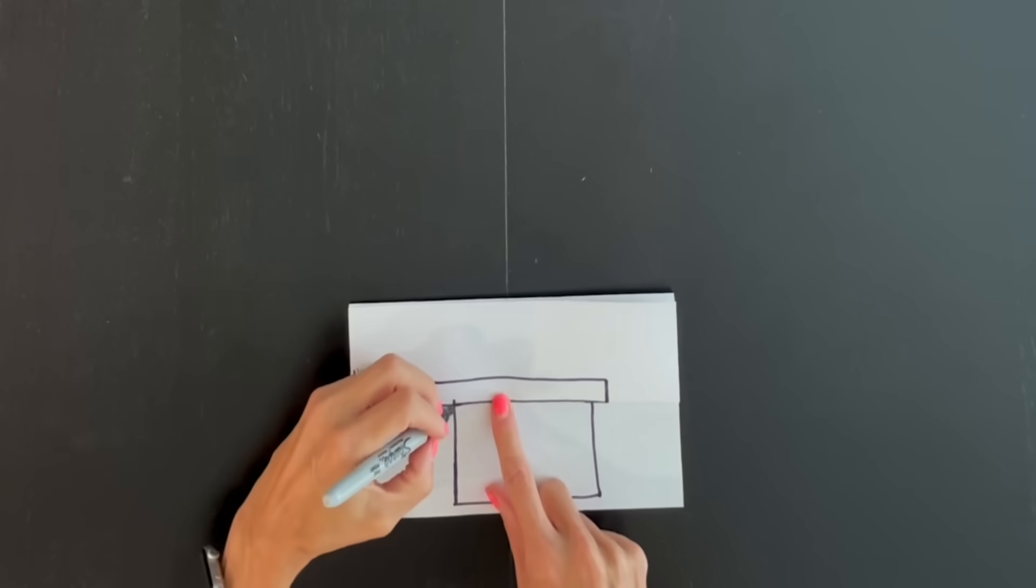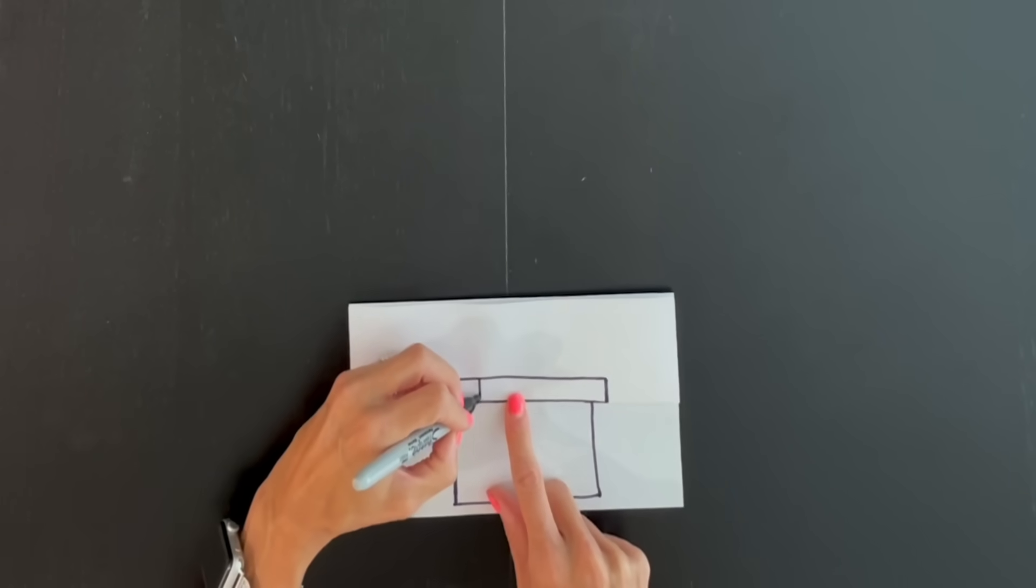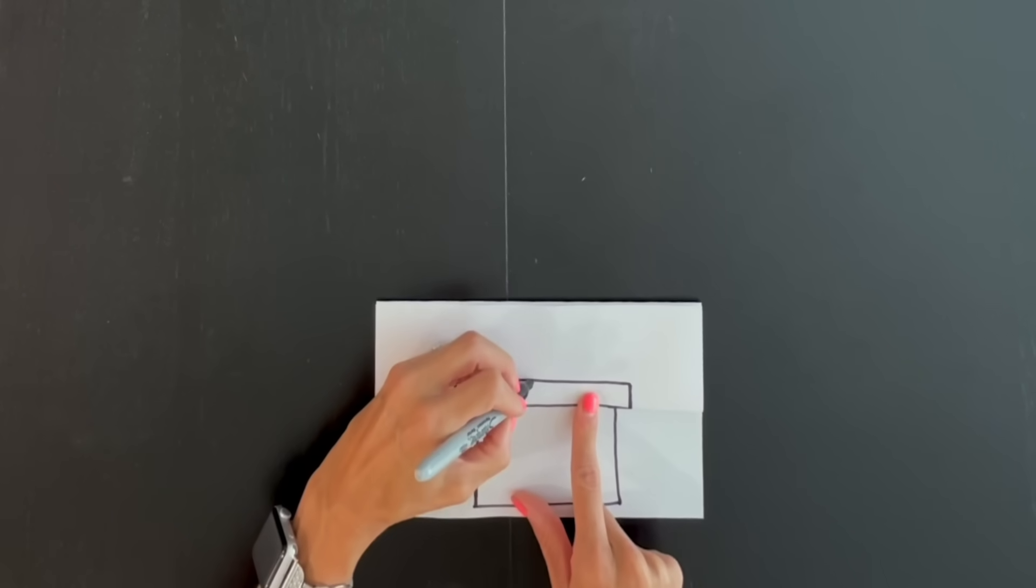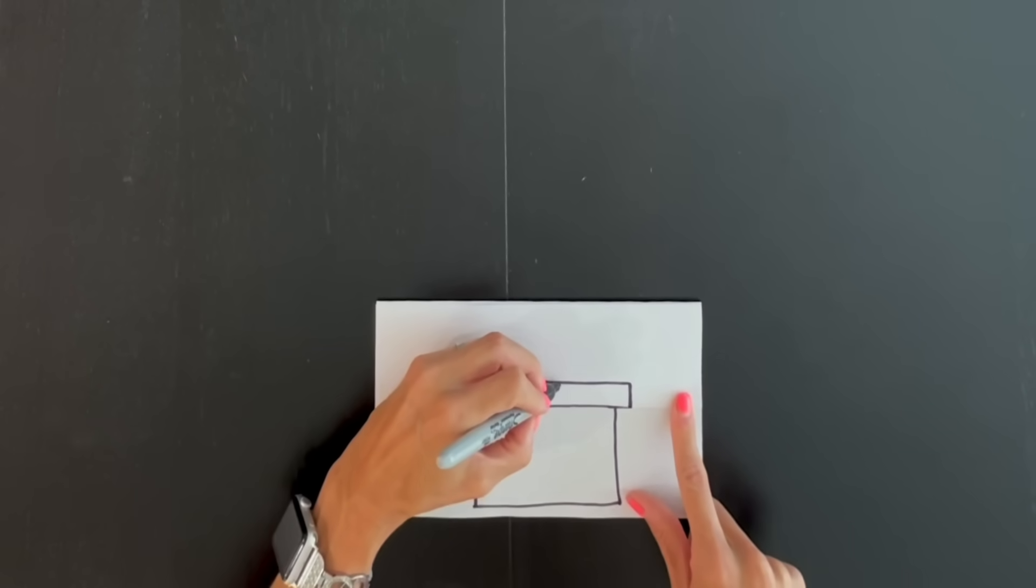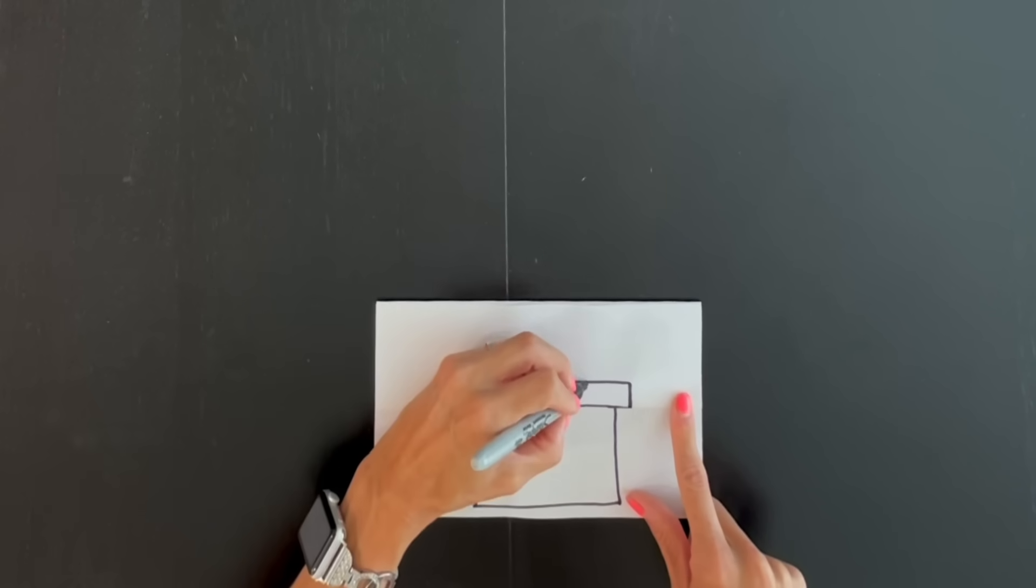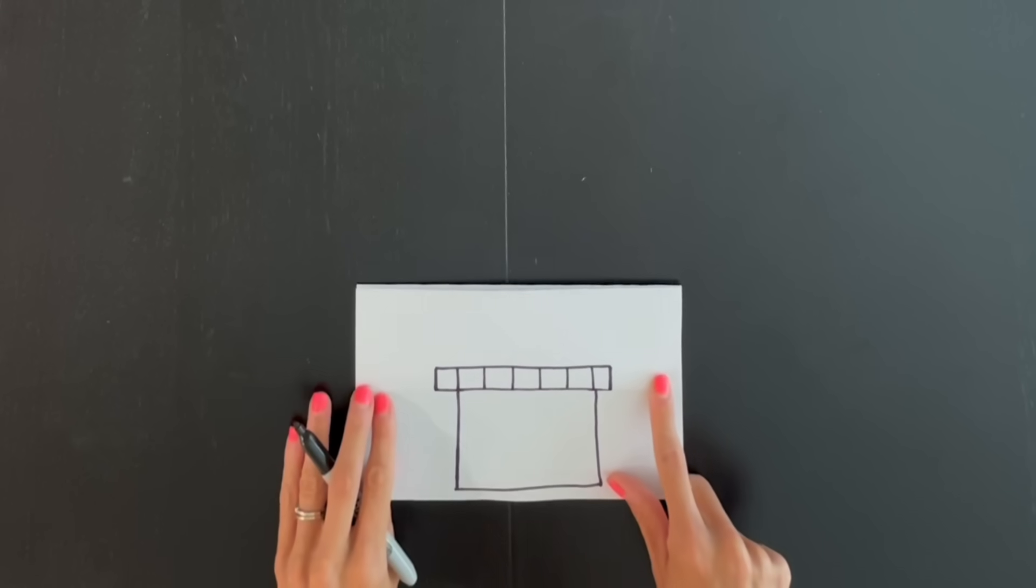Now since I accidentally did that, I'm just going to make my top have stripes. I'm drawing stripes all the way across mine.